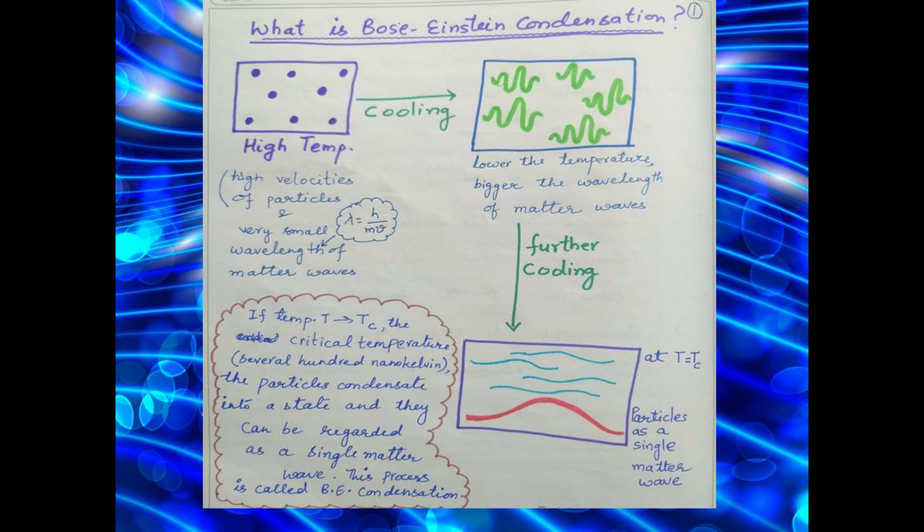Bose-Einstein condensation is observed for bosons, the integral spin particles. It can be explained with the help of this diagram. At higher temperatures, the particles possess higher kinetic energies and are in random motion. The wavelength of matter waves associated with them is very small. As the bosonic system is cooled down, the particles start marching in locked steps. As the wavelength of matter waves increases, it becomes easier to overlap with each other, thus forming a single matter wave shown in red here. In other words, the particles condensate into a single state and can be regarded as a single matter wave.